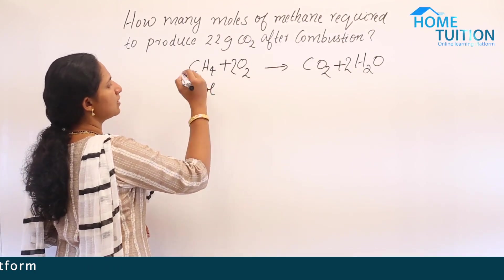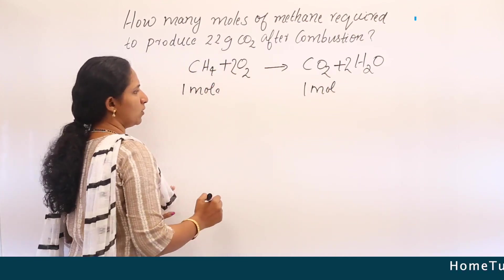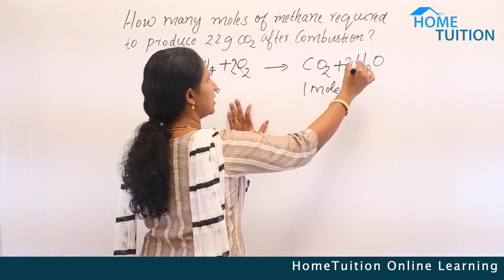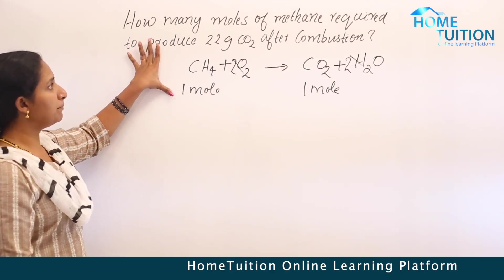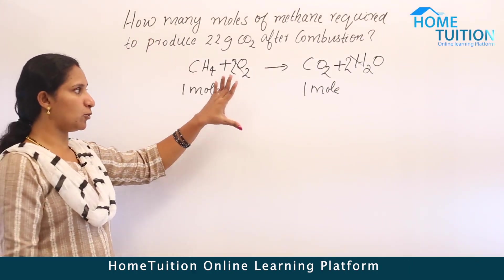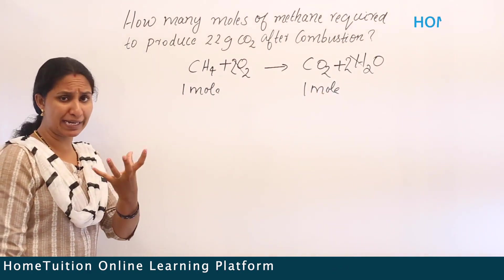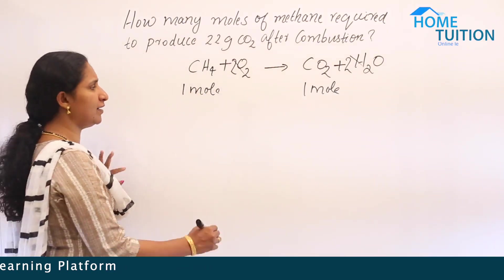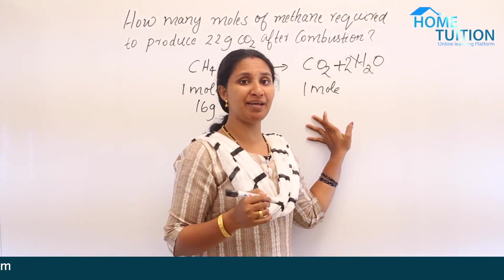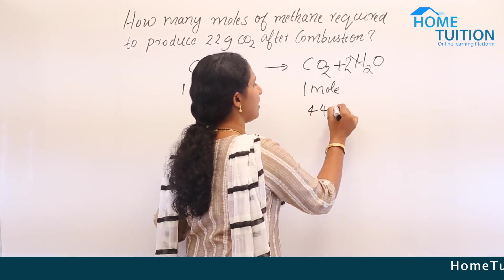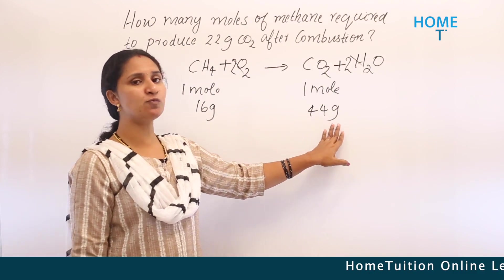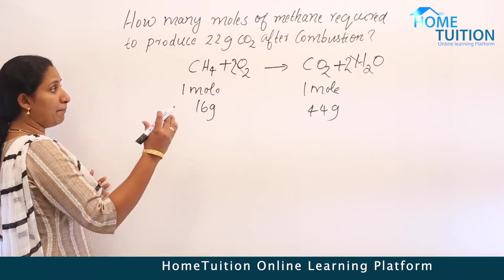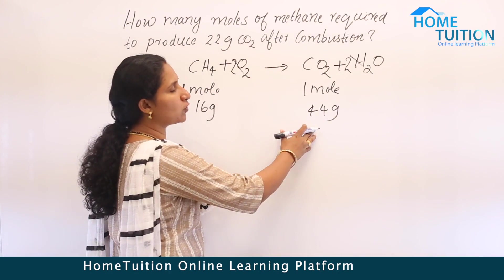From the balanced equation, one mole of methane produces one mole of carbon dioxide. One mole of methane is 16 grams, and one mole of carbon dioxide is 44 grams. So 16 grams of methane produces 44 grams of CO2. We want to find the moles of methane needed to produce 22 grams of CO2.